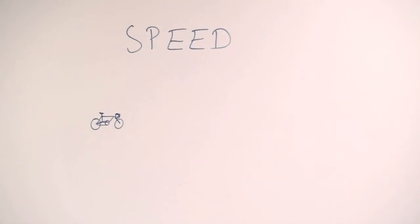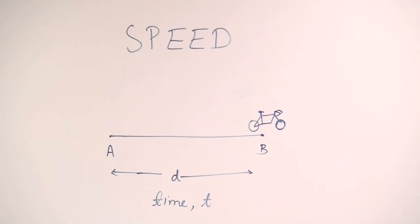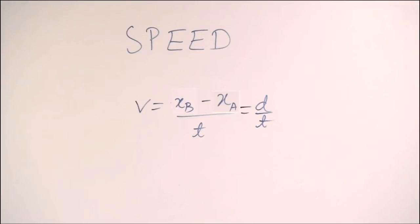Speed can be referred to as the rate of change of position. The average speed with which an object goes from point A to point B in a given time can be calculated by dividing the distance covered by the total time.